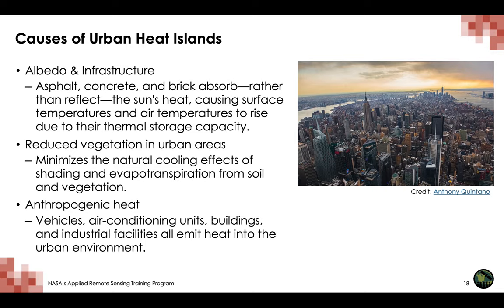Another cause of urban heat islands is reduced vegetation in urban areas. Trees and vegetation provide shade, which helps lower surface temperatures, and they also help reduce air temperatures through evapotranspiration, in which plants release water to the surroundings, dissipating ambient heat. In most urban areas, dry impervious surfaces predominate. As cities develop, more vegetation is lost and more surfaces are paved or covered with buildings, resulting in less shade and moisture to keep urban areas cool.